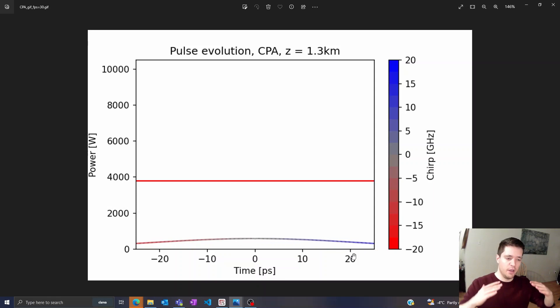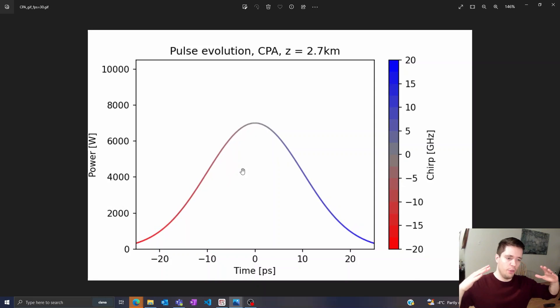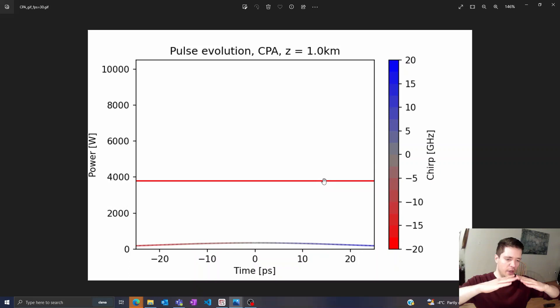Then as we enter the gain medium, the gain fiber, you can see the general power, the energy of the pulse gets boosted up. But the gain medium actually ends before we hit the damage threshold. Then when we enter the third fiber, the presence of anomalous dispersion will cause the pulse to recompact into a final pulse with a peak power that's much higher than the damage threshold.